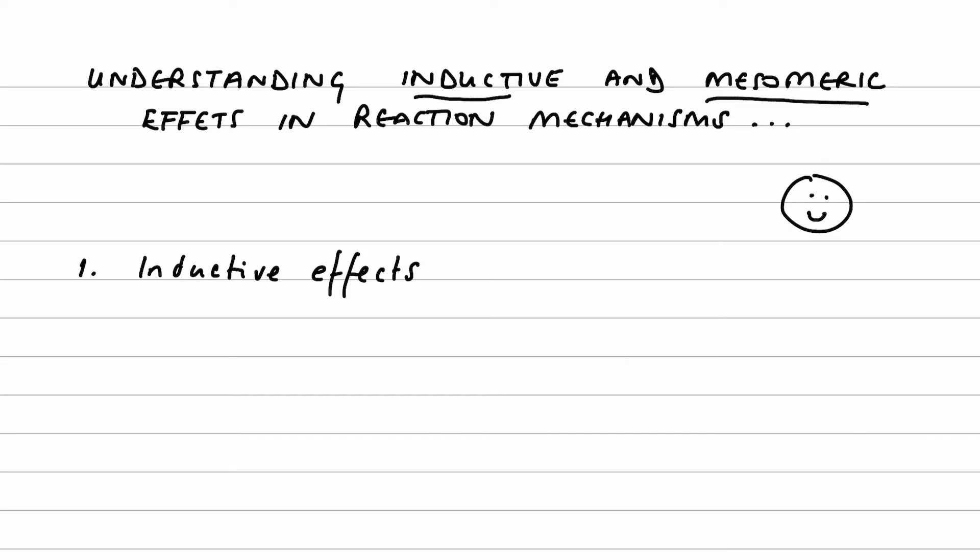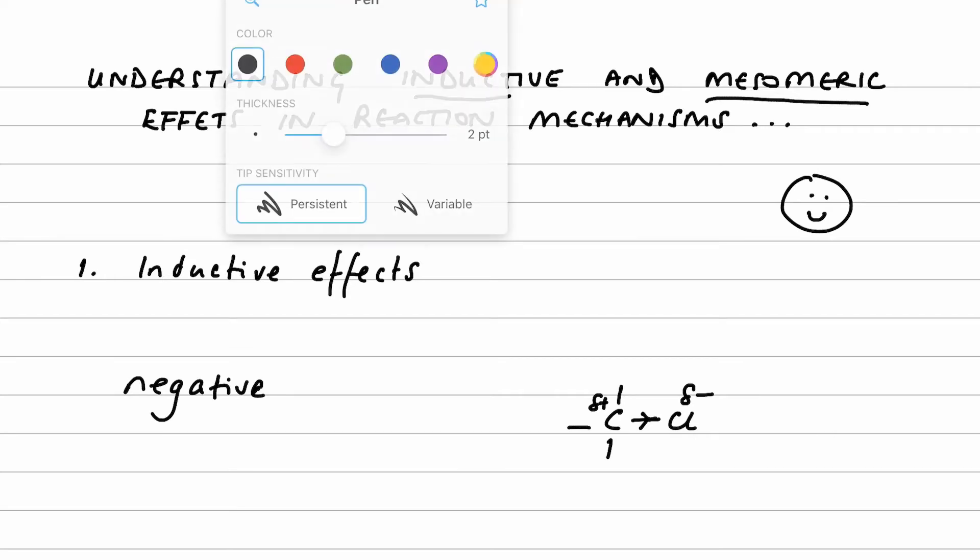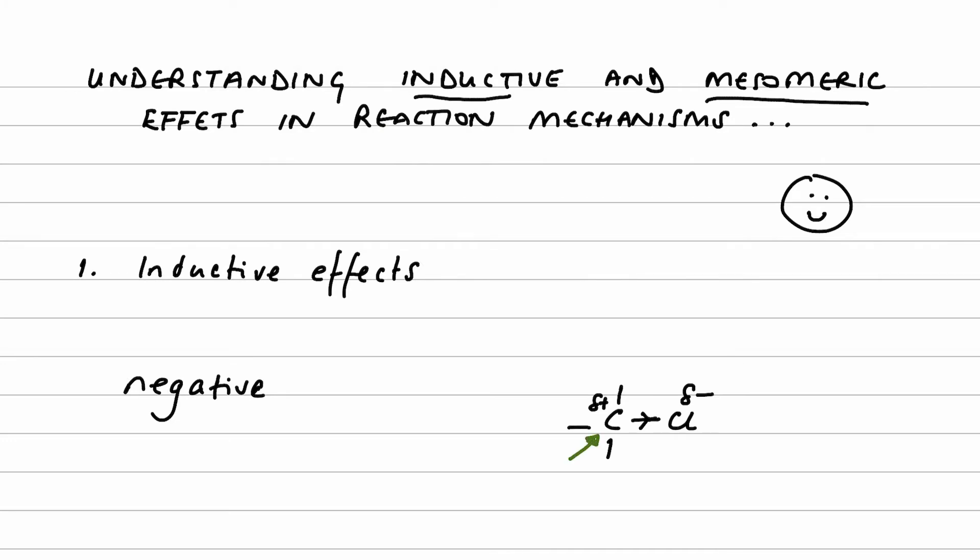The inductive effect that you will be familiar with is a negative inductive effect, and that is where we have carbon bonded to an electronegative element. As a result, the electronegative element, in this case chlorine, is pulling the electrons in the carbon-chlorine bond towards itself. As a result, this carbon here becomes electron deficient - it's now delta positive, which means it's open to attack from a nucleophile, a hydroxide ion for example. If that means nothing to you, then please go back and check the previous video in this series on the overview of reaction mechanisms.